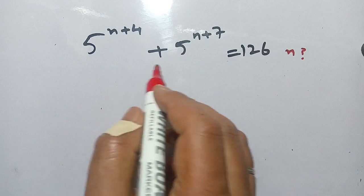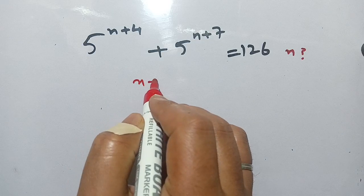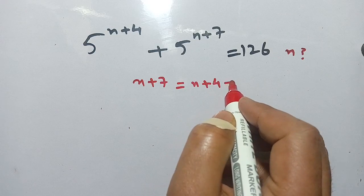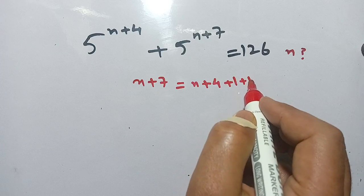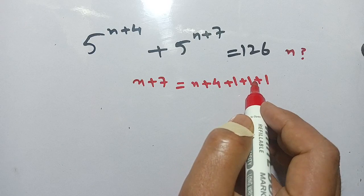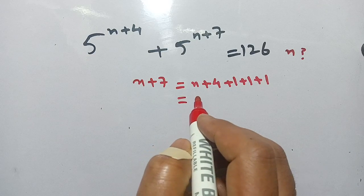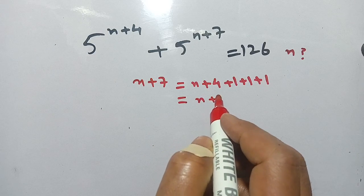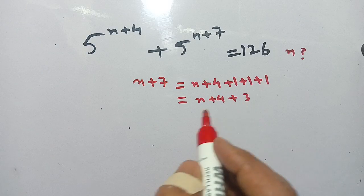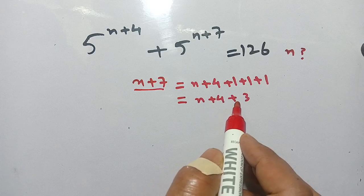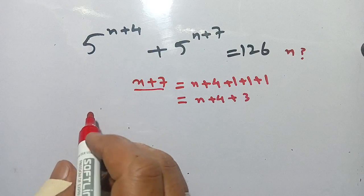Now we see that n plus 7 can be written as n plus 4 plus 1 plus 1 plus 1, which is 4 plus 1, 5 plus 1, 6 and plus 1, 7. So it equals n plus 4 plus 3. Now replace n plus 7 with n plus 4 plus 3 and we get: